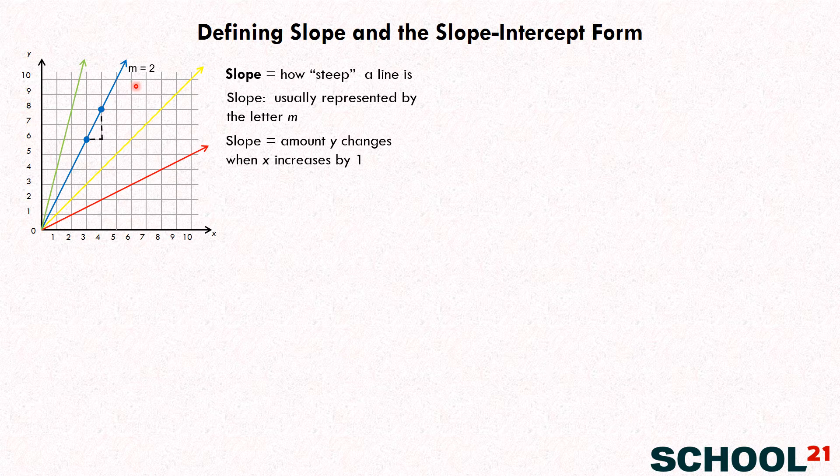Now let's look at another line. Let's look at the yellow line here. I've drawn in the dotted lines from one point to another. X increases one. How much does Y change? One. One also, right? So we can write M equals one.